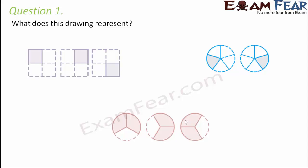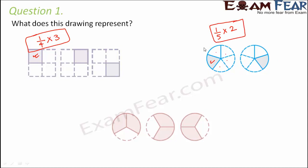Question 1: What does this drawing represent? You have a square divided into 4 equal parts with 1 part shaded, representing 1/4. You have 3 such squares, so altogether this represents 1/4 multiplied by 3. Similarly, the next figure shows circles with 5 equal parts and 1 part shaded - that is 1/5 - and you have 2 such circles, so this represents 1/5 into 2. The third figure shows circles where 2 parts out of 3 are shaded, giving 2/3, and with 3 such circles this represents 2/3 multiplied by 3.